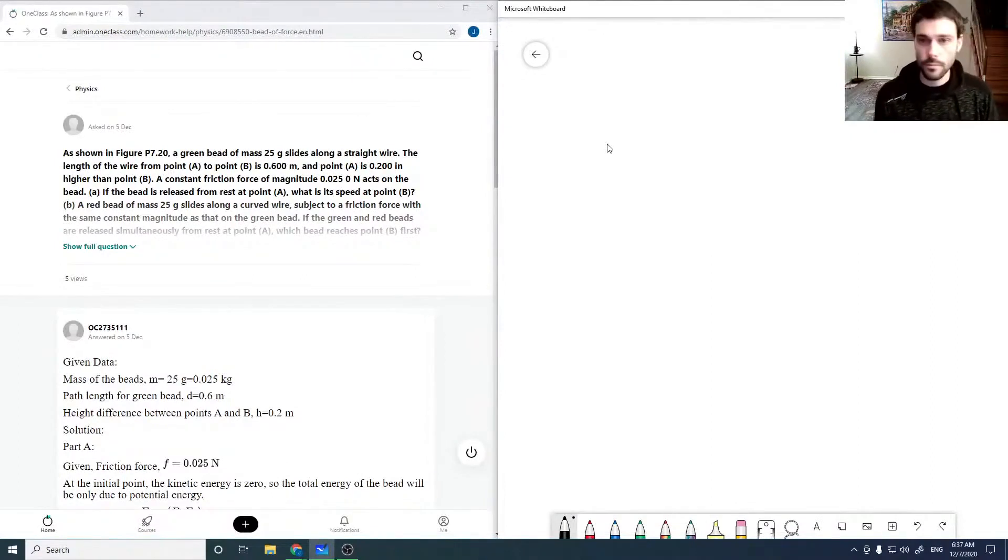Okay, so for the second one, I'm just going to draw the figures. It says P720, so we have A going to B along a straight path with a bead, and then we have a curved path with another bead.